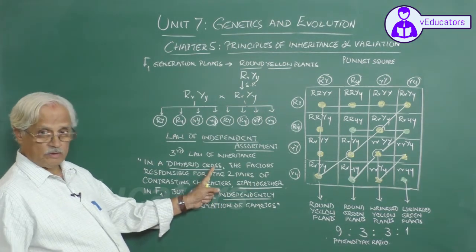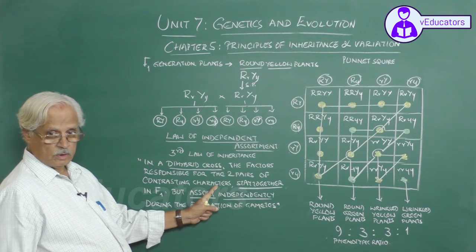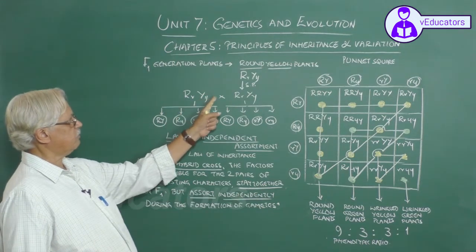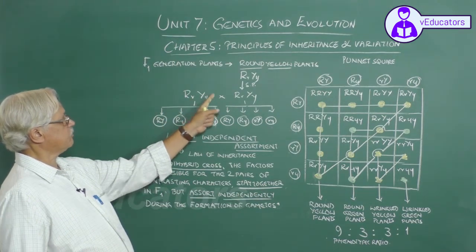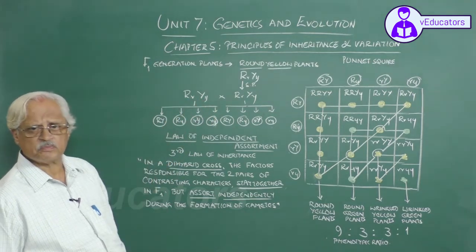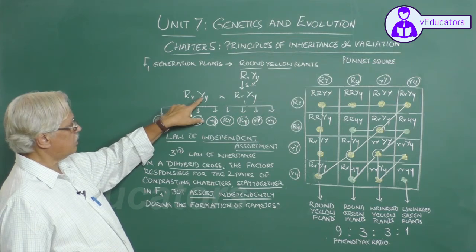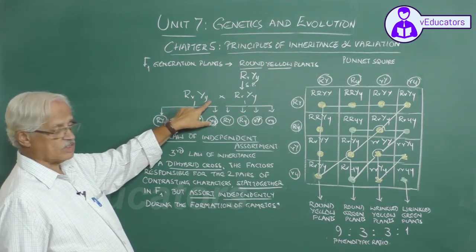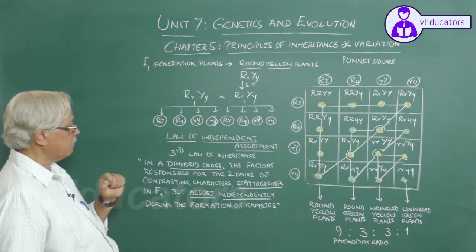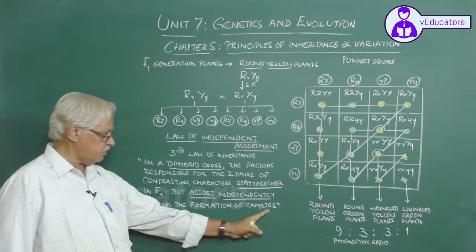This is the statement of the law of independent assortment. In a dihybrid cross — a cross involving two pairs of contrasting characters — there are four factors. These four factors stay together in the F1 plant. There is a dominant gene for round seed coat, recessive gene for wrinkled seed coat, dominant gene for yellow cotyledon, and recessive gene for green cotyledon. They stay together, but these factors assort independently during the formation of gametes.